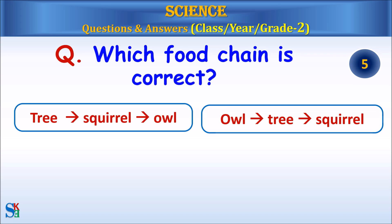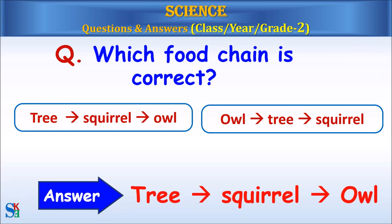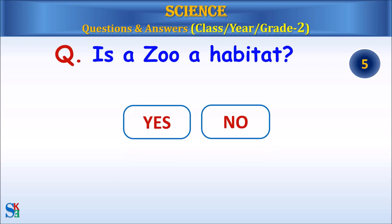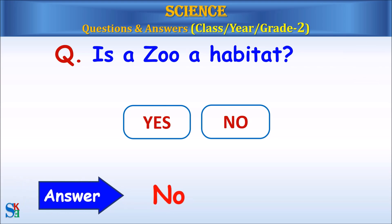Which food chain is correct? Tree, squirrel, owl or owl, tree, squirrel? Answer, tree, squirrel, owl. Is a zoo a habitat? Yes or no? Answer, no.